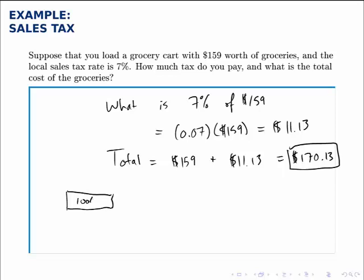and added on 7% for a total of 107%. So if we find what 107% of $159 is, that will give us the same number. So if we multiply 107% times 159,